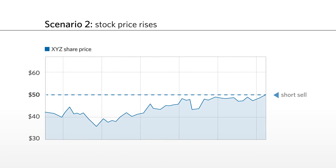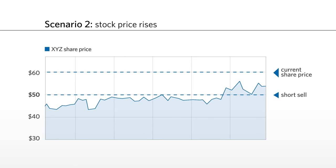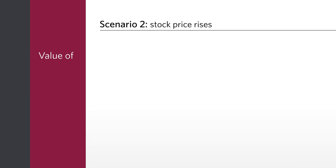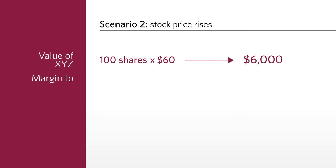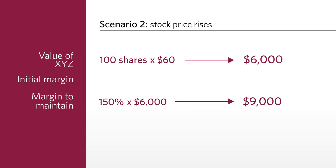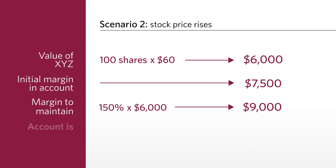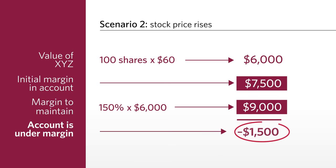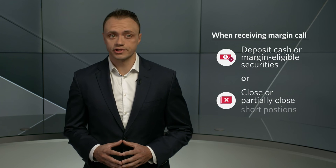In Scenario 2, the price of XYZ moves higher — a negative result for you. Imagine XYZ is now trading at $60. The value of XYZ is 100 shares times $60 equals $6,000. The margin needed to maintain 150% is $9,000. The initial margin in the account is $7,500, and the account is now under margin by a difference of $7,500 minus $9,000, or $1,500. You'd receive a margin call and need to deposit cash or margin-eligible securities to bring the account back in line. You can also close or partially close one of your short positions to keep the account in good standing.